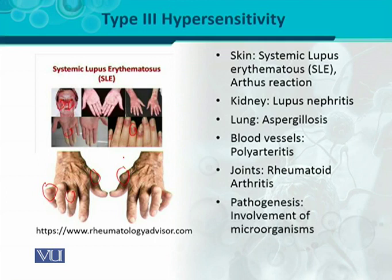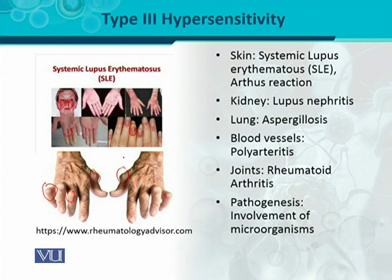In the pathogenesis of type 3 hypersensitivity, the main involvement is of certain microorganisms whose antigens activate the immune system in such a way that an exaggerated overreaction is produced. When this reaction occurs, an antigen-antibody reaction takes place and an immune complex is formed. That immune complex will deposit either generally or on a specific tissue — examples include skin, kidney, lungs, blood vessels, and joints — and it will cause disease and pathogenesis at that site.